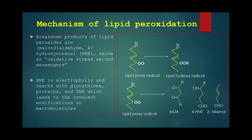Lipid peroxy radicals can be converted into lipid hydroxyl radicals, or alternatively into breakdown forms like MDA, 4-HNE, and 4-oxo-alkenal. 4-HNE is electrophilic and reacts with glutathione, proteins, and DNA, leading to covalent modifications on macromolecules.